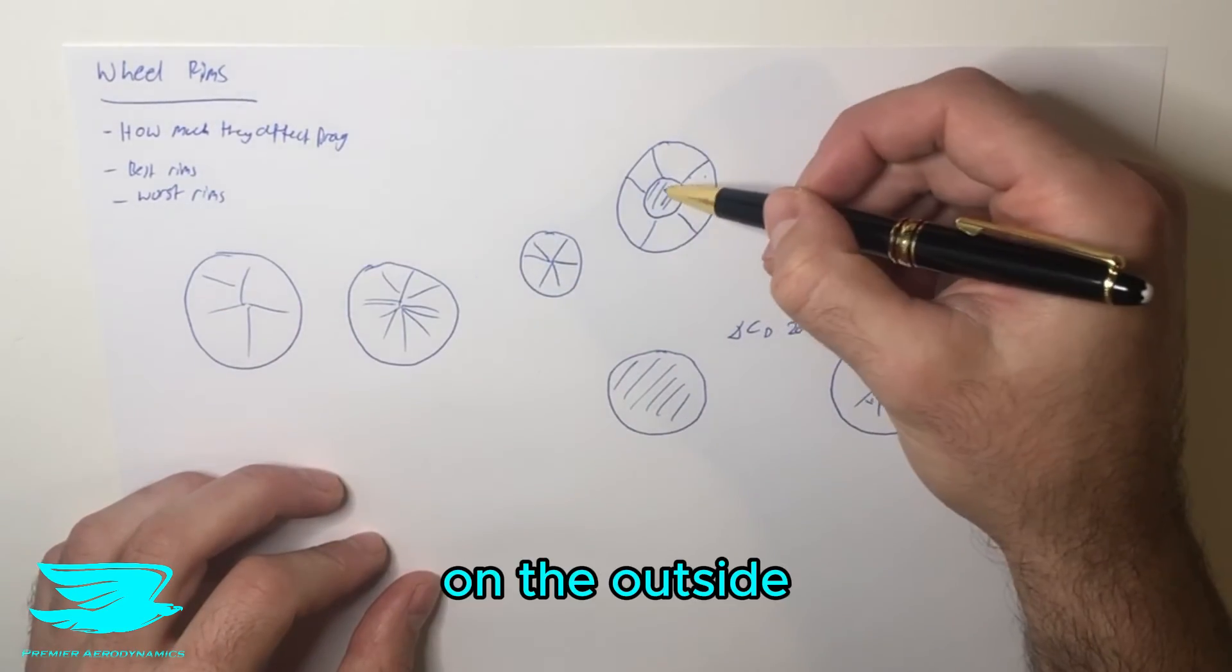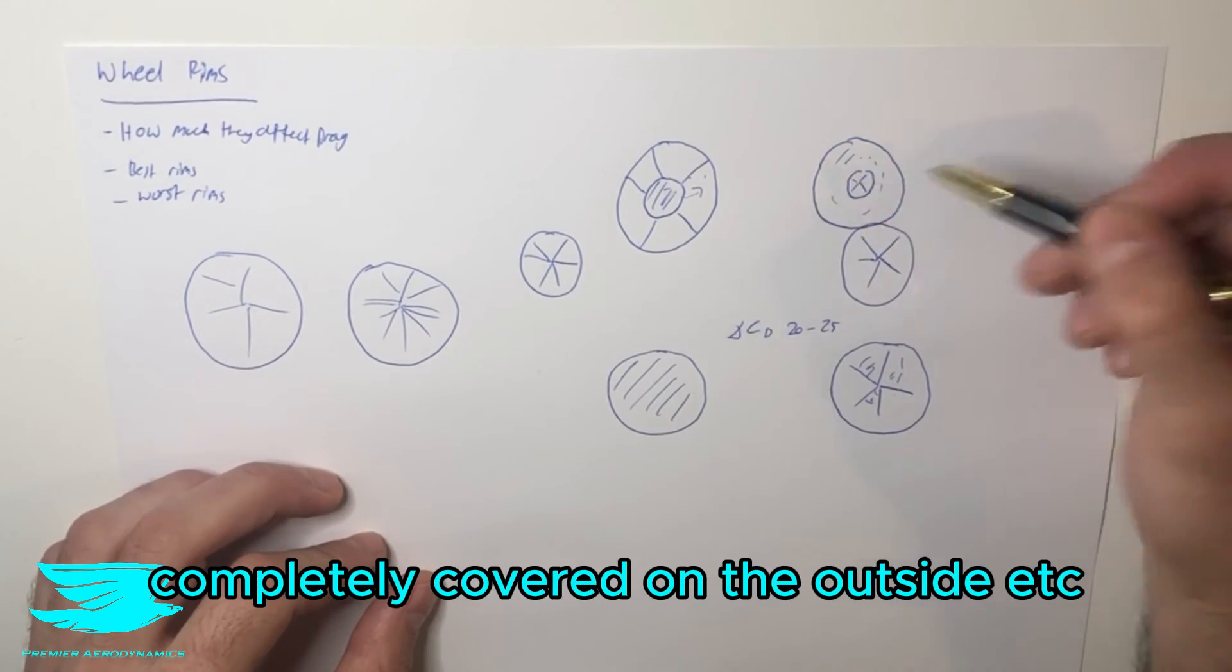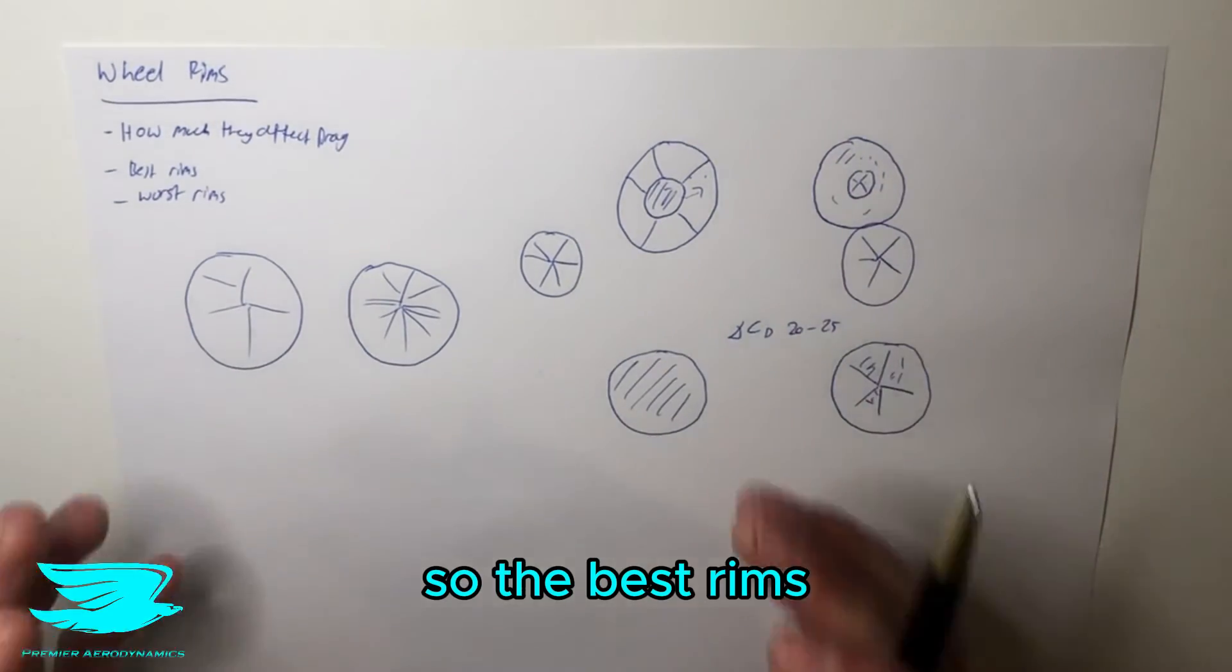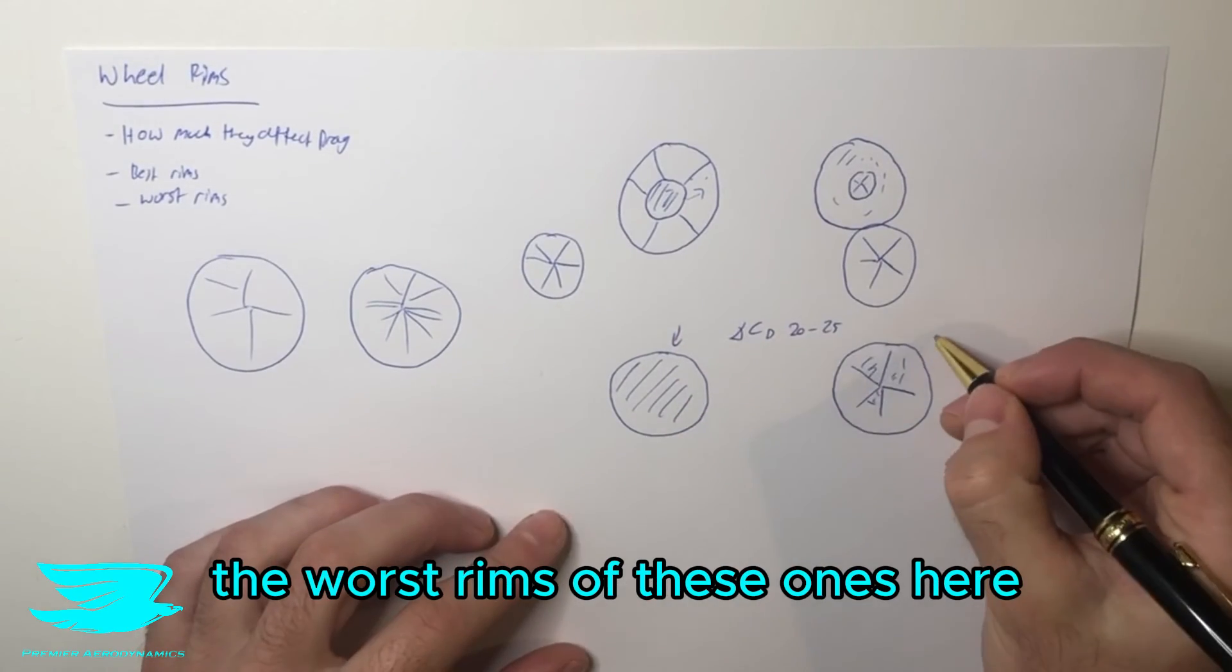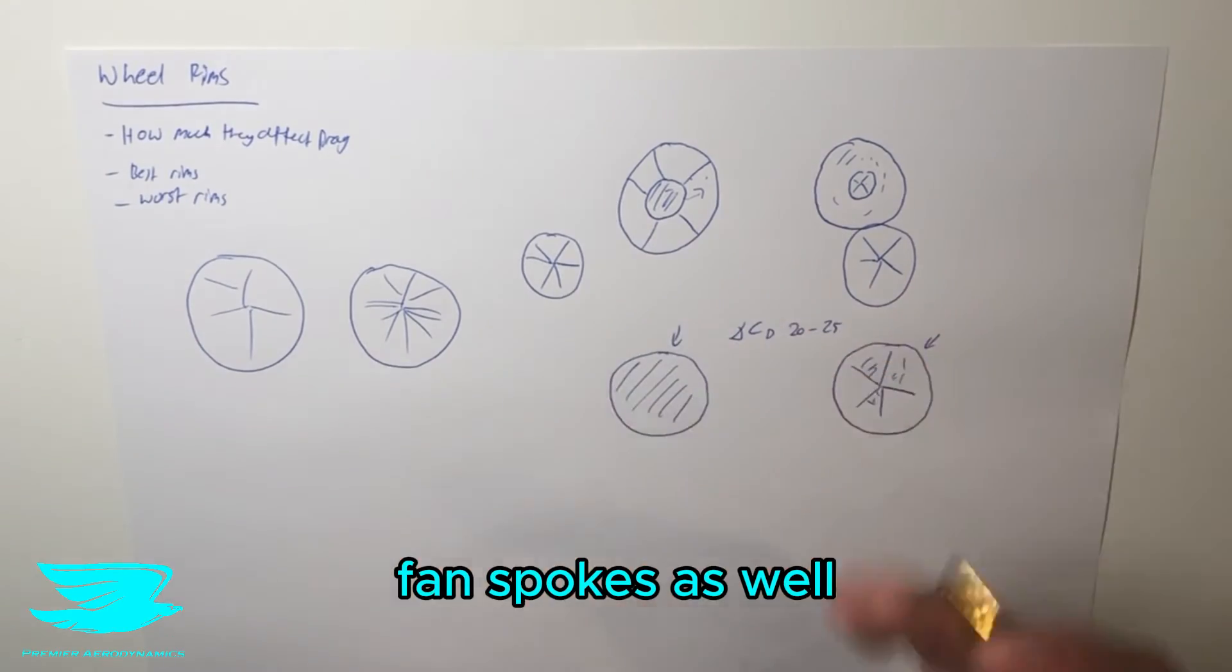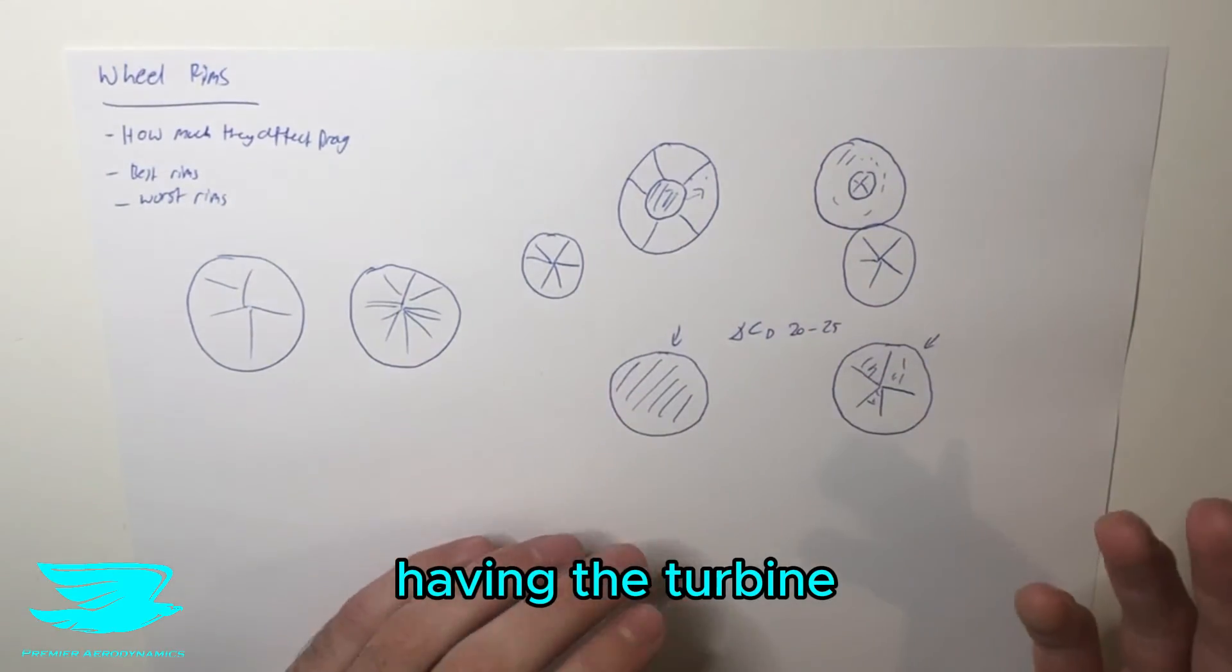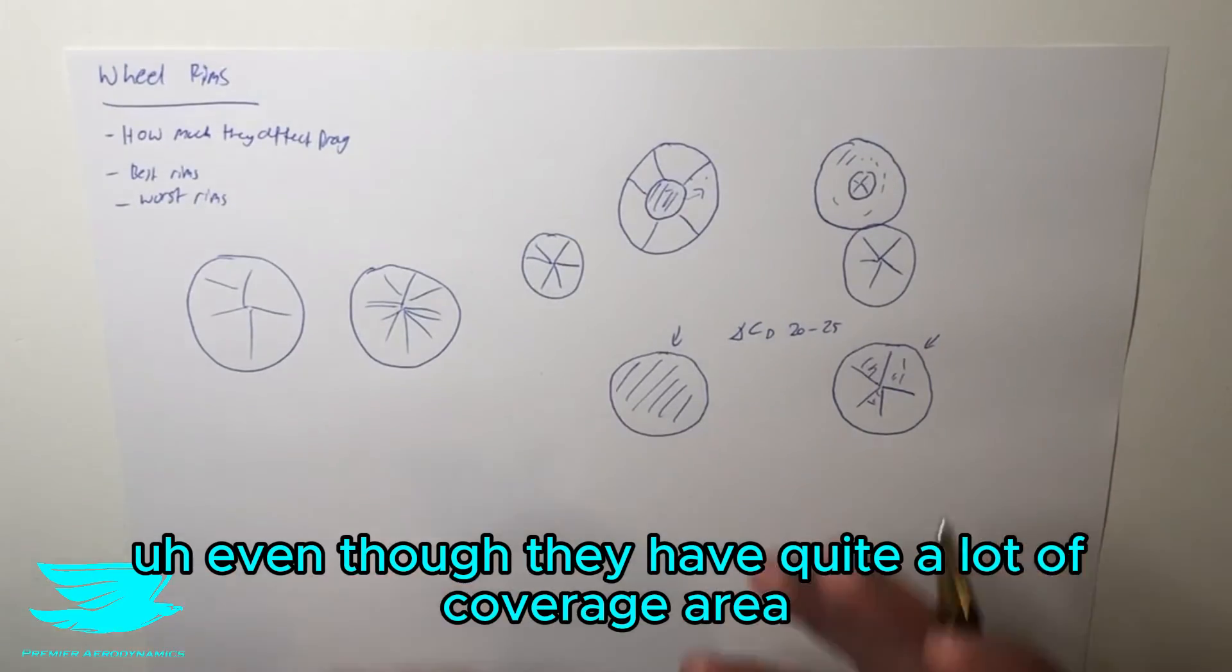Whether you have many rim spokes, few spokes, completely open on the outside, covered on the inside, open on the inside, covered on the outside, etc. So the best rims are the completely closed ones. The worst rims are the completely open ones, and also arguably the ones with the fan spokes as well.